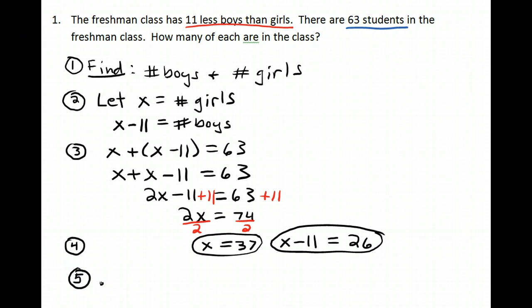And then for number five, we write a conclusion that answers step one. So, therefore, there are thirty-seven girls and twenty-six boys in class.